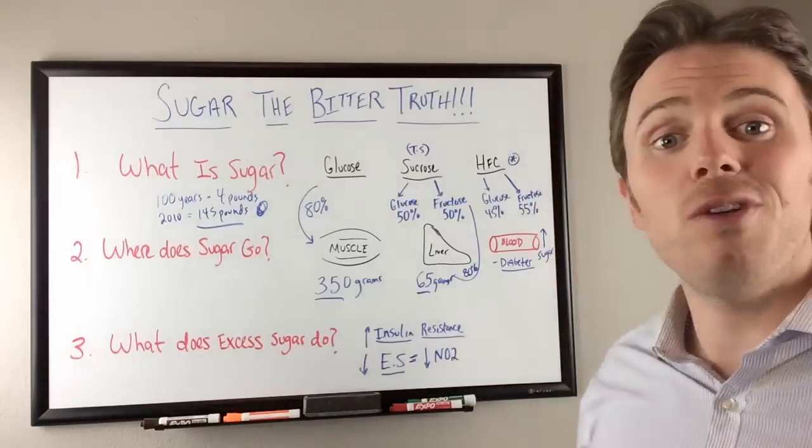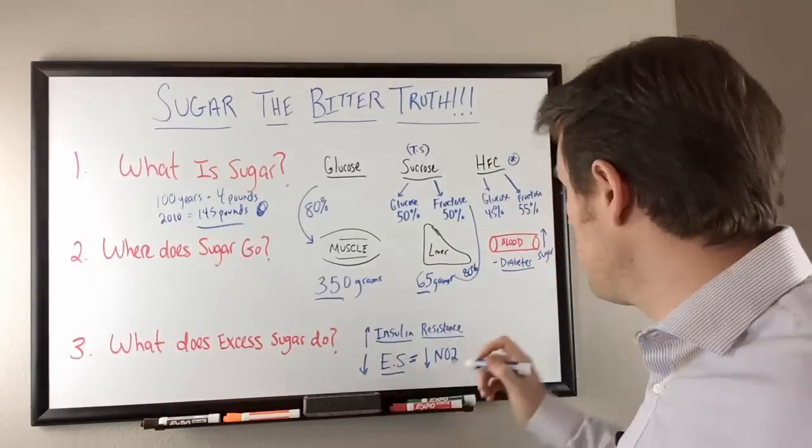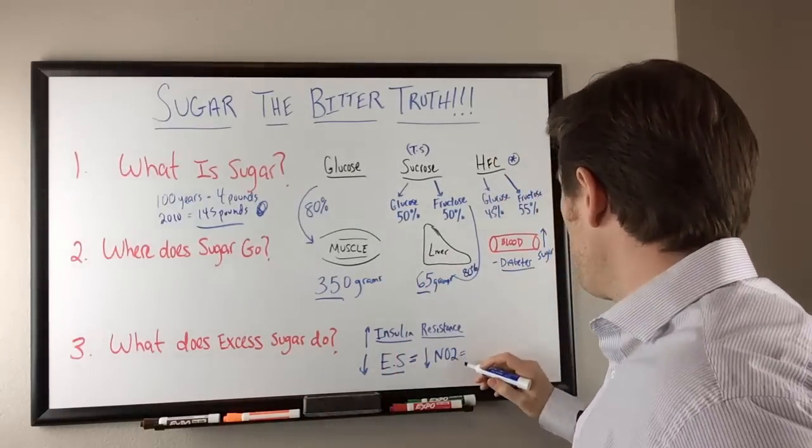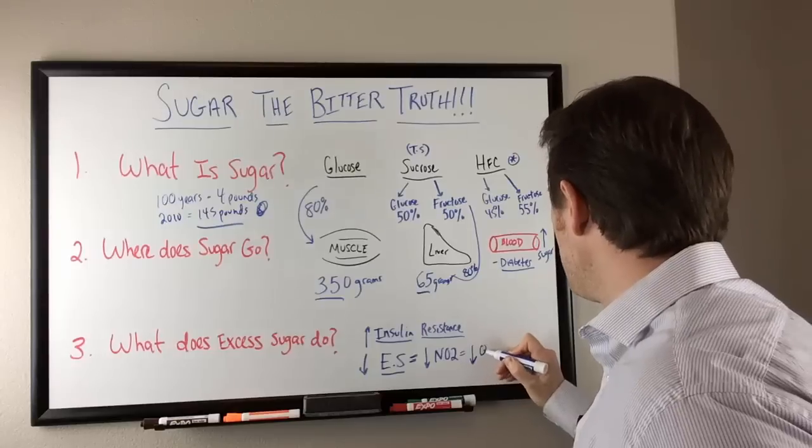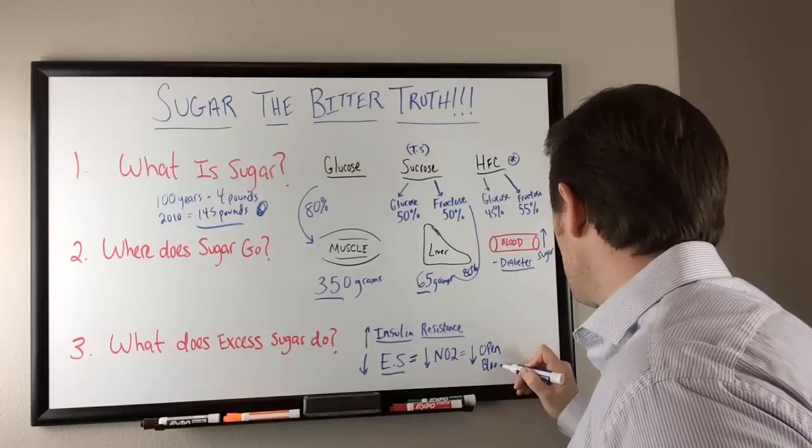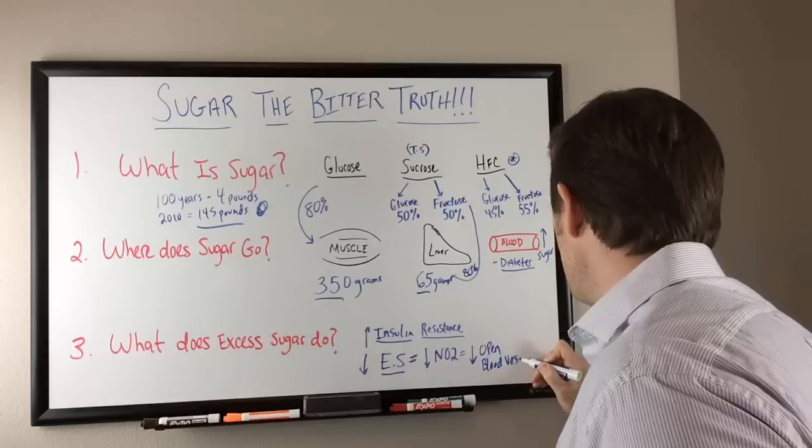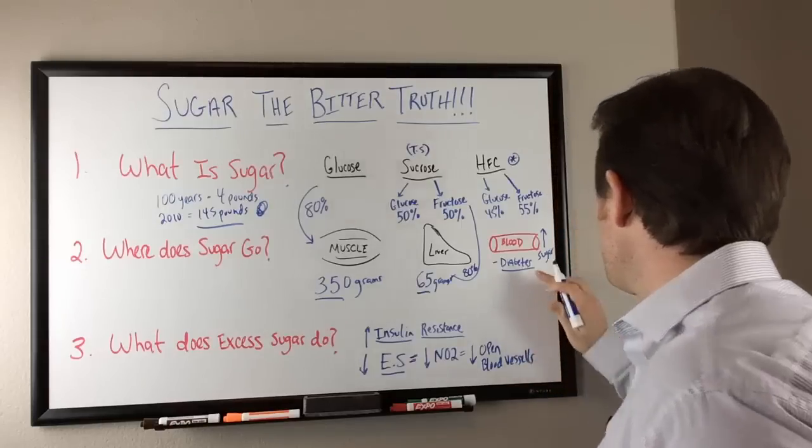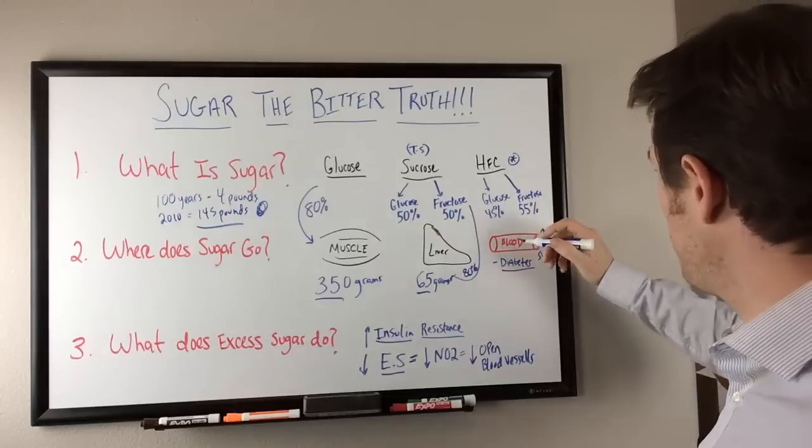And what NO2 does, it's a vasodilator, right? So we have decreased open blood vessels. So guess what this does to our blood vessels over here. You can see here, here's our blood vessel here, nice and wide, and it actually takes it and narrows it down.